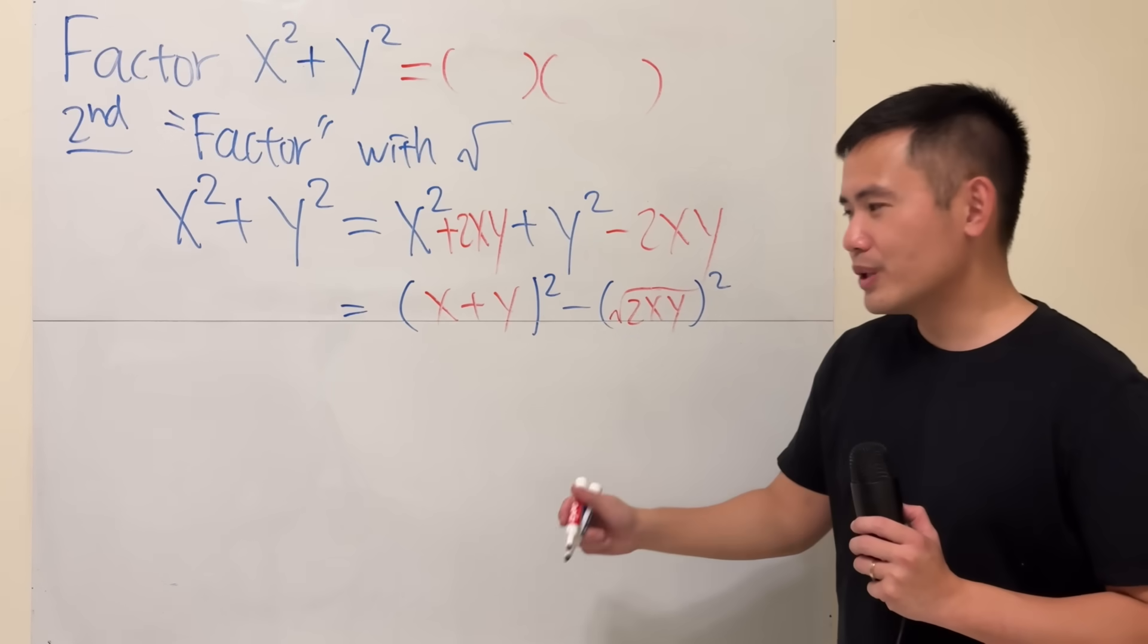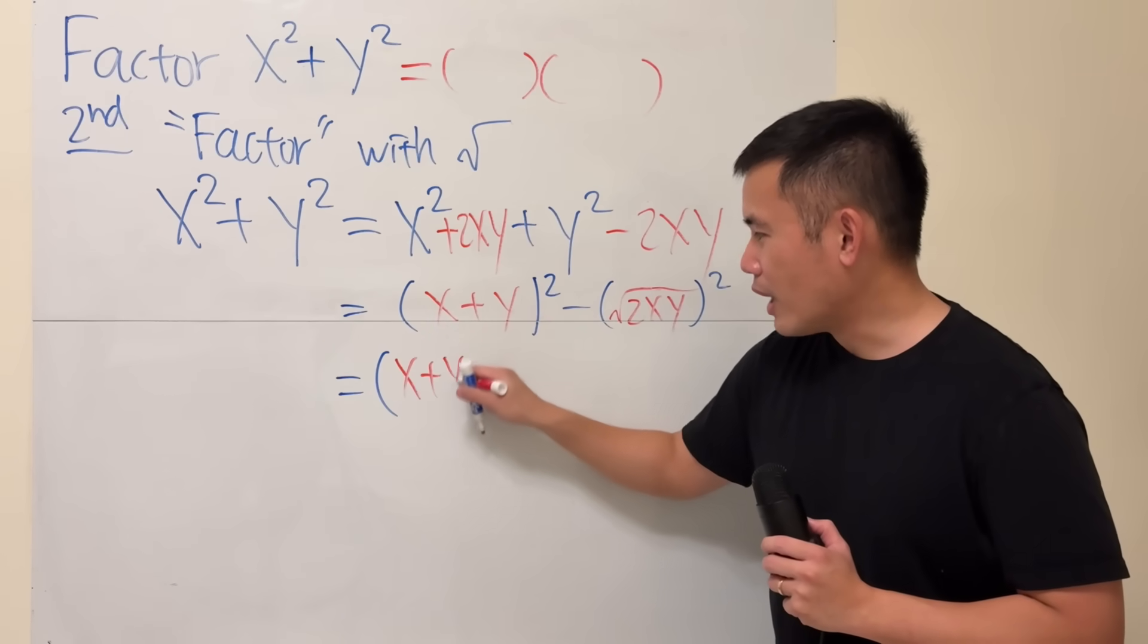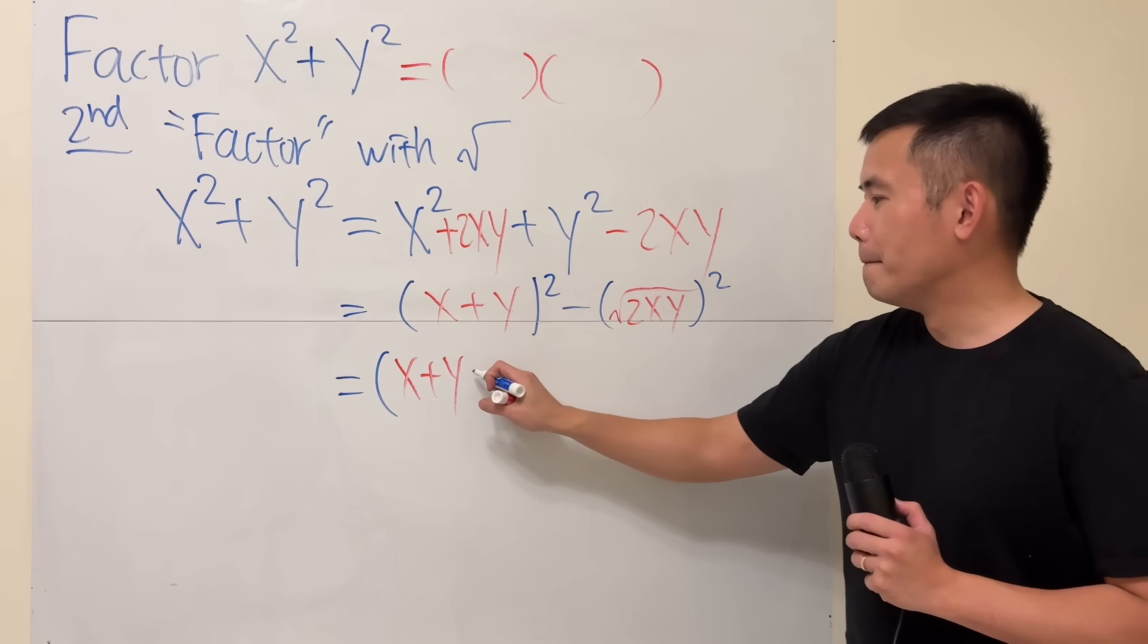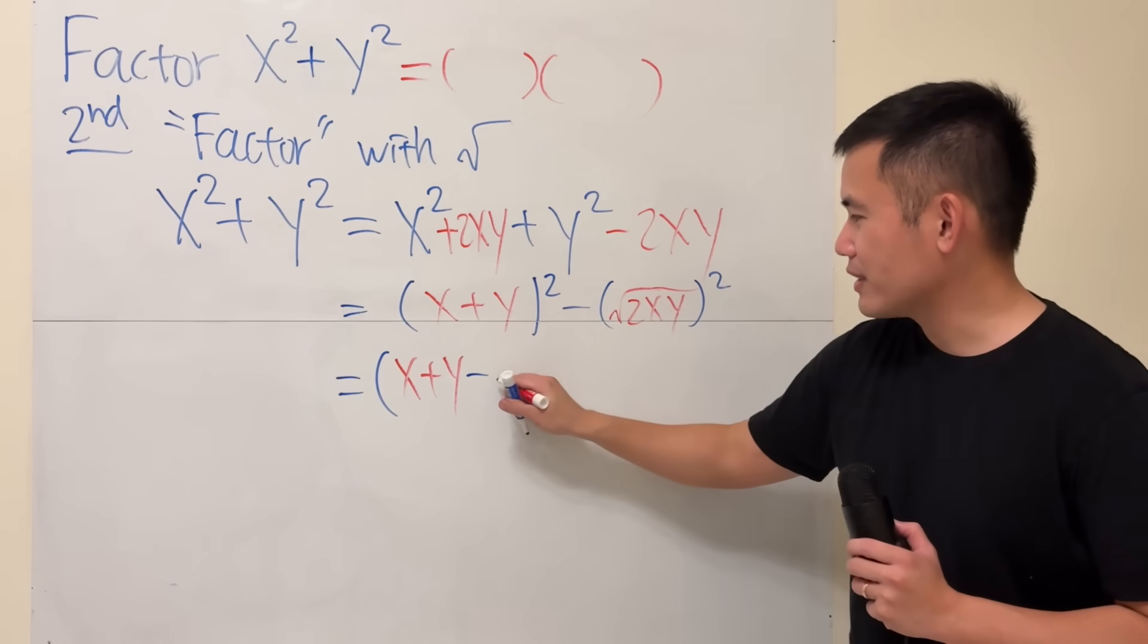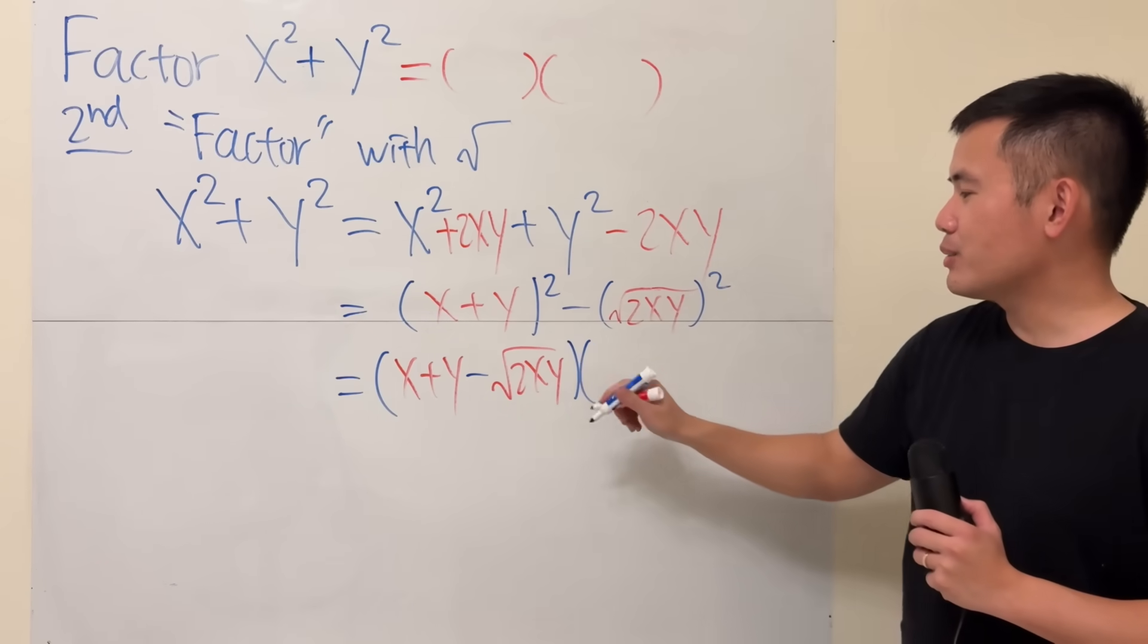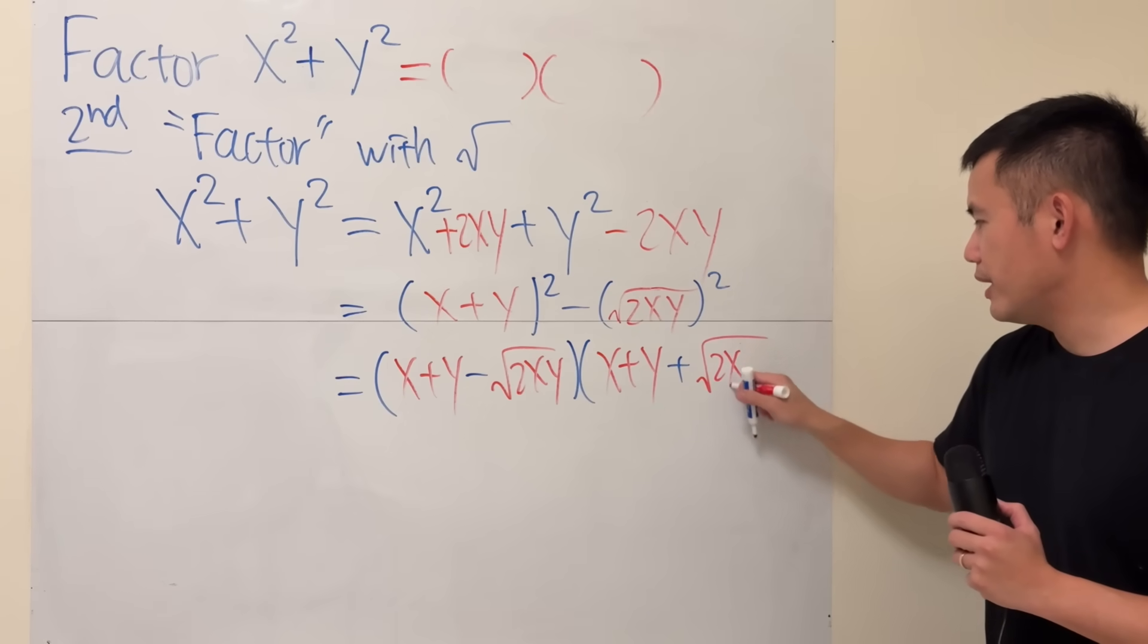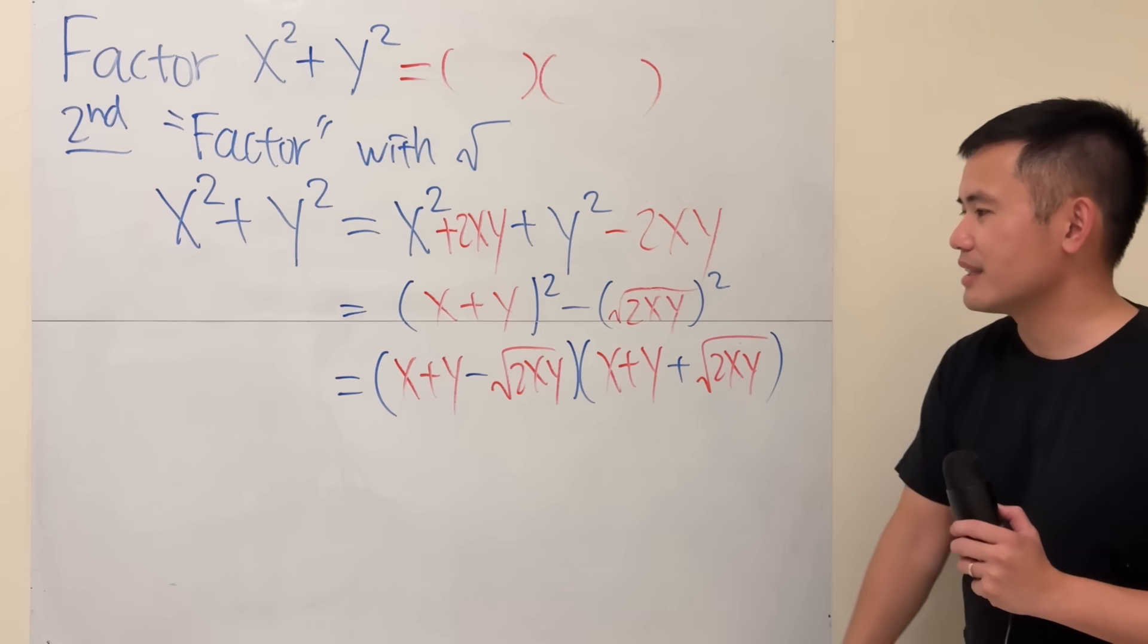Now, difference of two squares, we can use the formula again. So, we get x plus y, the first term, minus the second term from the inside here, times x plus y, and then plus square root of 2xy.